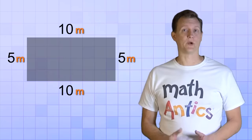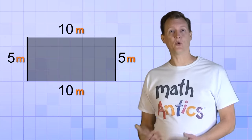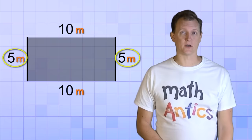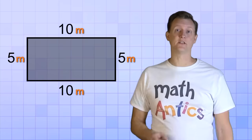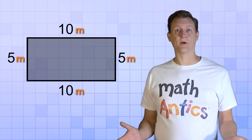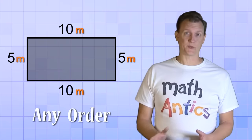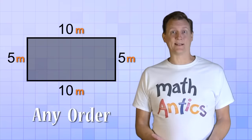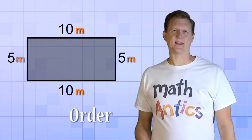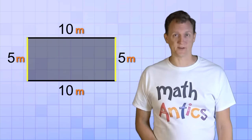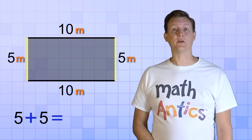This time our polygon is a rectangle, and you can see that the shorter sides are each 5 meters long, and the longer sides are each 10 meters long. So, let's add them all up. We can add up the sides in any order we want to, as long as we don't forget any sides or accidentally count any of them twice. And I think I'll add up the two short sides first. 5 plus 5 equals 10.